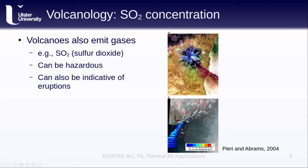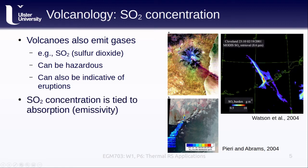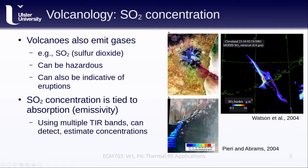Sulfur dioxide is something that volcanologists often try to monitor. How much absorption or emission there is in a plume is heavily tied to the concentration of sulfur dioxide and other gases, which means that with observations from multiple thermal infrared bands, we can estimate these concentrations and monitor them over time—especially using sensors such as MODIS, which acquire images on an almost daily basis. The example shown on the right from a 2000 paper by Watson and others shows the estimated SO2 concentration during an eruption of Mount Cleveland, Alaska in 2001.